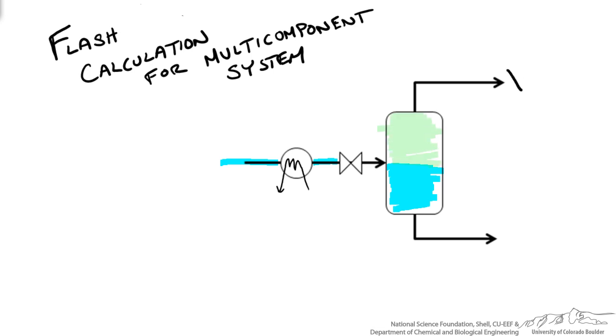So now we have two streams. We have a vapor stream and a liquid stream. And we will call F our feed. So we do this to separate multiple components as they will preferentially phase separate and have different compositions in both the vapor and the liquid stream.